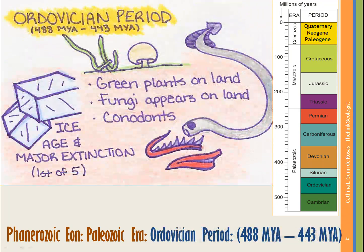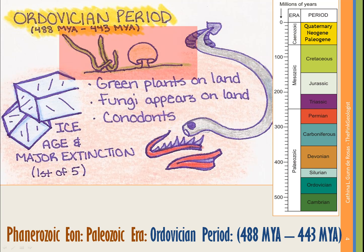Now from the Cambrian, we're going to move on to the Ordovician period. This period covers from 488 million years ago to 443 million years ago, and we see a lot more of the interesting diversification of life as well as some other distinctive things.